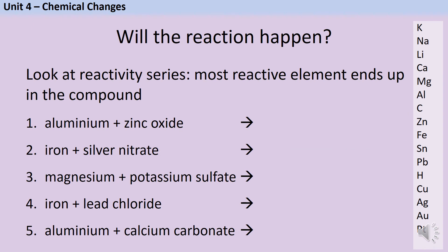In a displacement reaction between one pure metal and a metal compound, the more reactive metal will always end up in the compound at the end of the reaction. You need to be able to use the reactivity series to decide whether or not a displacement reaction will happen. For each of these five questions, look up the two metals, decide which one is more reactive, and therefore whether the displacement reaction will happen or not. If it will happen, finish off the word equation.